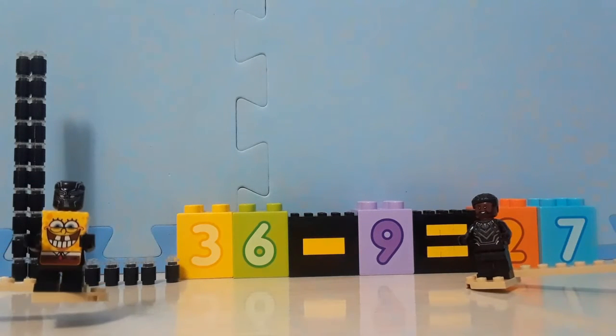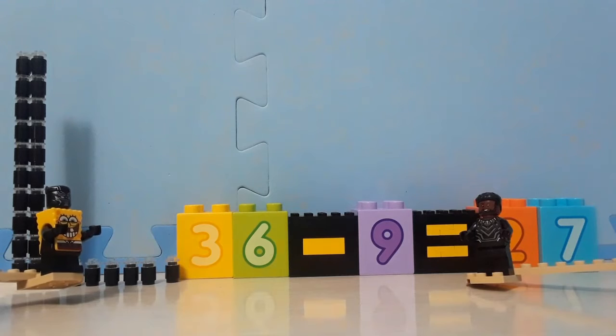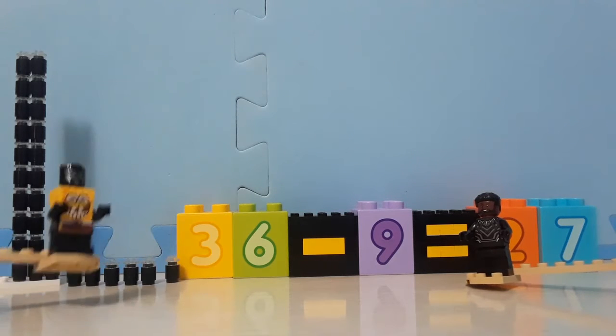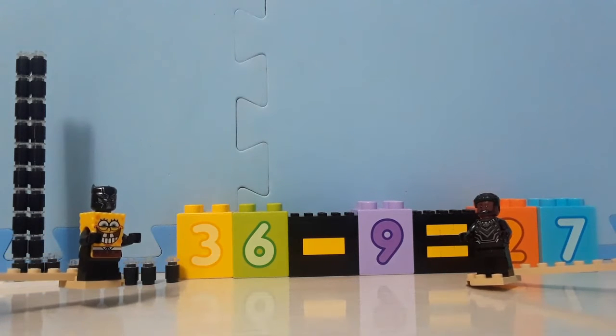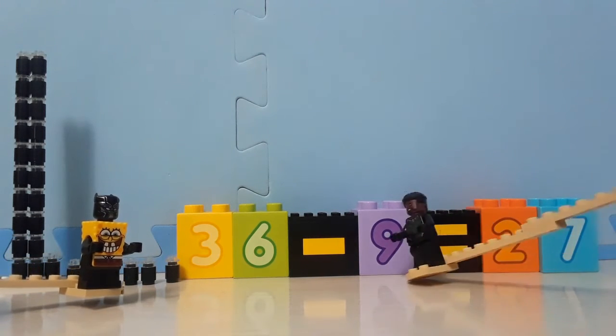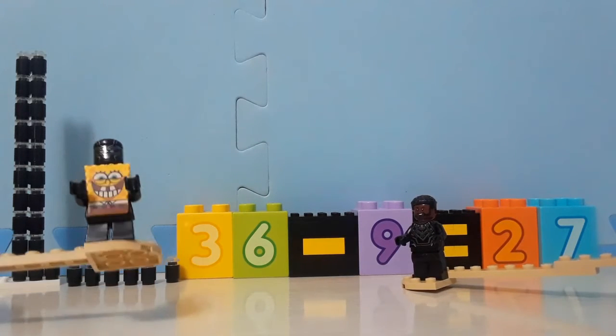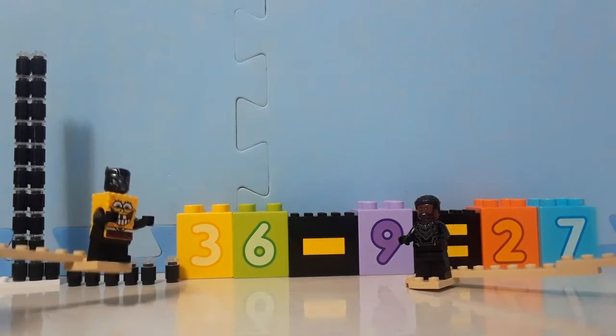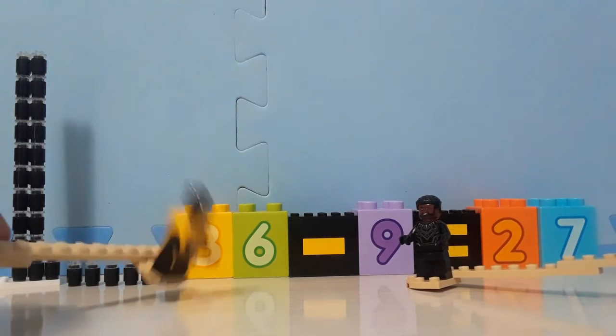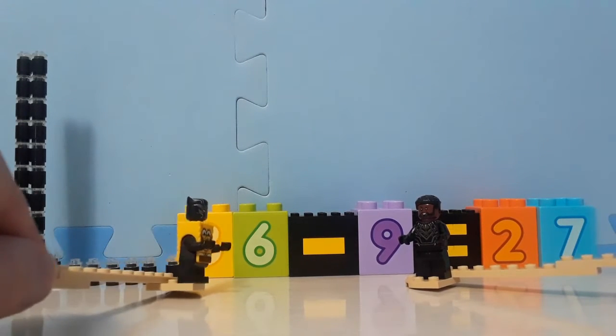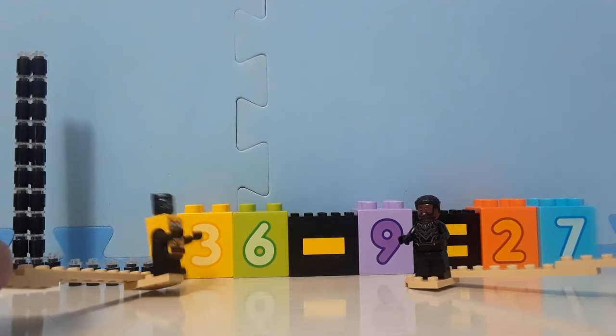But if you're making it ten less and one more, you didn't really make it ten less. That's right SpongeBob, I made it nine less. Oh, because we're subtracting nine. Oh, I love this trick Mr. T'Challa. Are you sure the one for eights is going to be just as sneaky?